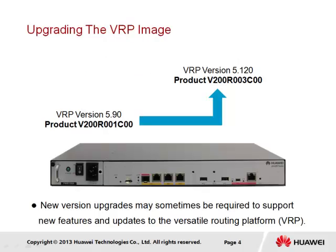As new features are introduced and improvements made to the current VRP product, the device is generally expected to be upgraded with the new image. The version of VRP used commonly by ARG3 series devices is VRP version 5. As new versions of the VRP image are released, we see this version increment and the product number providing clearer information regarding the level of changes that have been made.